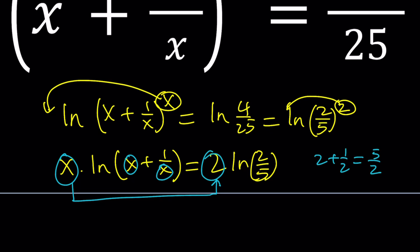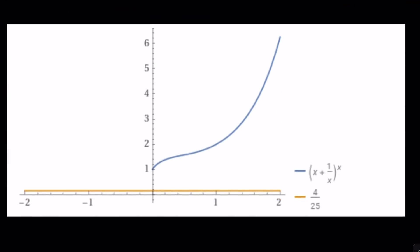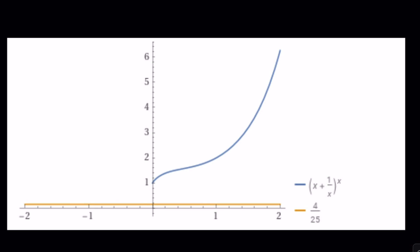Anyways, before we proceed with some cases, let's take a look at the graph. The graph of x plus 1 over x to the power of x, and then the horizontal line 4 over 25, which is somewhat close to 1 over 6.